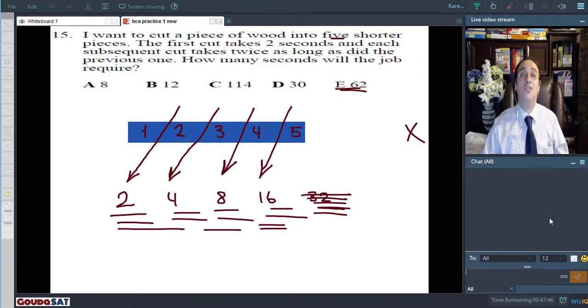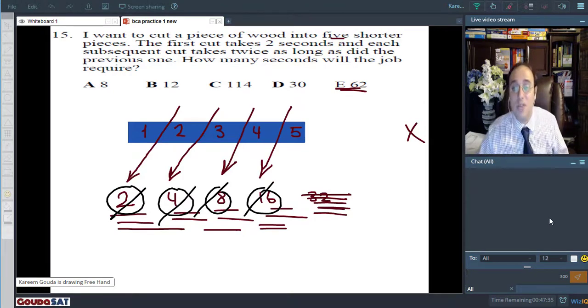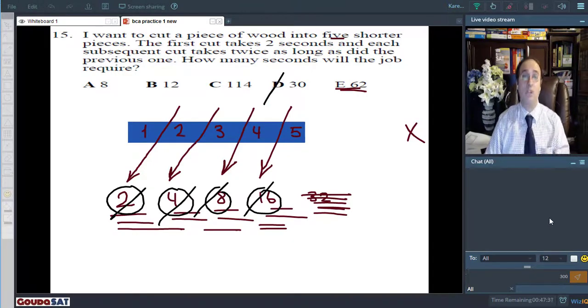One trick is to try to group numbers that give you a 10 together. For example, I'd say, okay, 2 and 8 is 10. Four and 16 is 20. 20 and 10 is 30. That's an easier, faster, and more efficient way to add even easy numbers like this on the test. So the answer is D, 30 seconds.